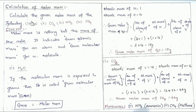In this we are going to see the following sums: calculate the gram molar mass of H₂O (water molecule), CO₂ (carbon dioxide), NH₃ (ammonia molecule), and CH₄ (methane molecule).